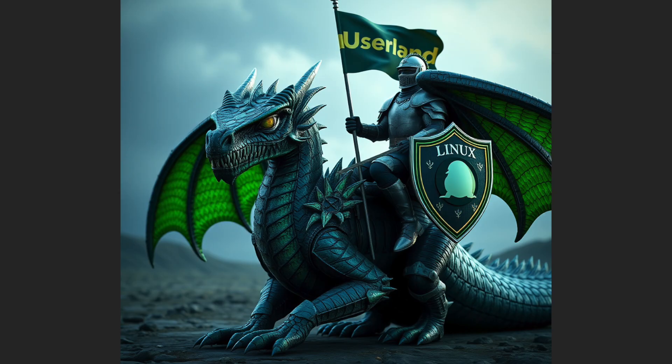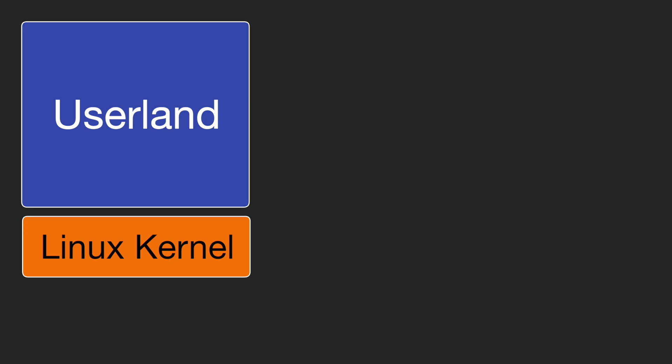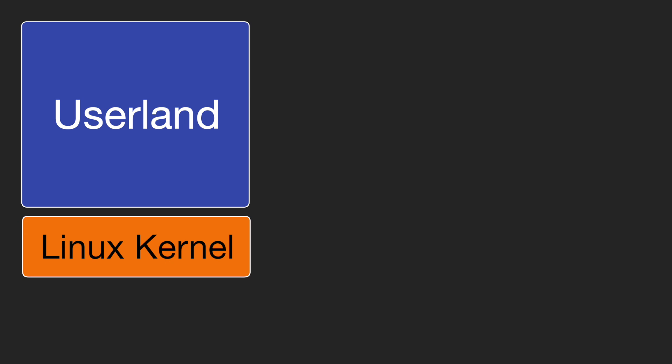Let me tell you a story. Once upon a time, in a vast digital realm, there was a kingdom ruled by 32-bit computers. They were kind, benevolent rulers. Applications roamed freely in a land called Userland, using the kingdom's resources as they saw fit. At the heart of it all was Linux, the wise ruler of kernel space, controlling the mighty computer that lay beneath and keeping harmony across the realm.